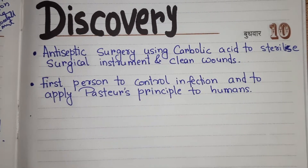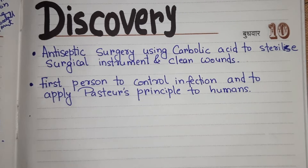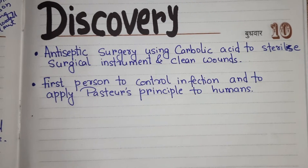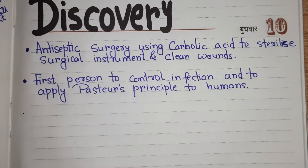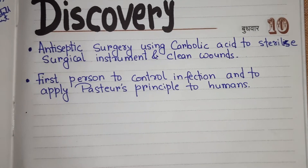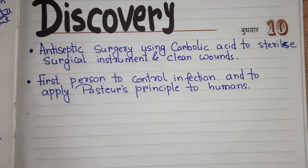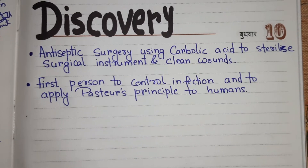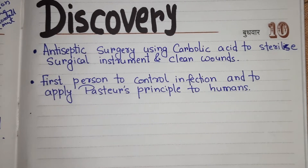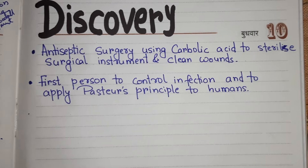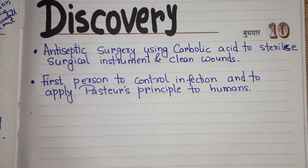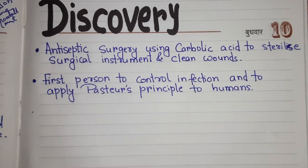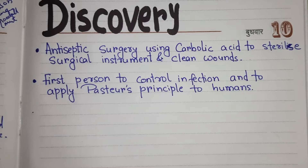Before Lister, sterilization methods weren't introduced and people were unaware. Surgeons used to wear the same bloody and unwashed medical clothes to show their experience. Medical instruments were rarely changed and staff never washed their hands — a terrible situation that led to many patient deaths.